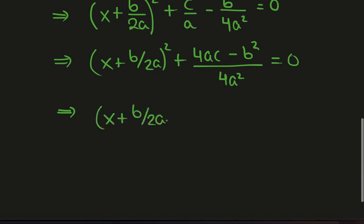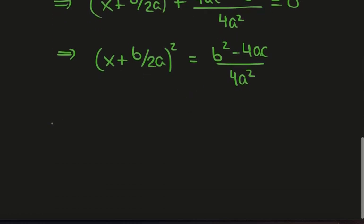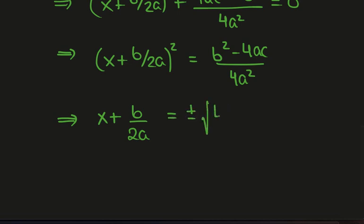What we'll have is x plus b over 2a squared equals b squared minus 4ac over 4a squared, because we'll have a subtraction, so multiplication by negative 1. Now we'll take the square root of both sides, and what we'll have is x plus b over 2a equals plus or minus the square root of b squared minus 4ac all divided by 4a squared.